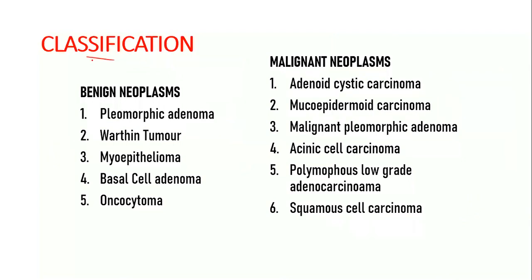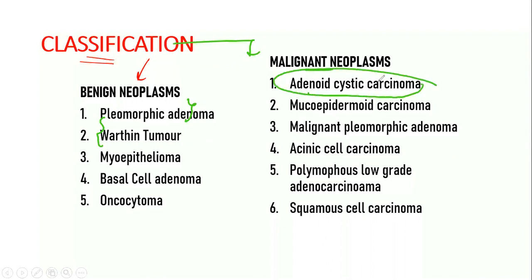Recalling the broad classification of salivary gland tumors, we had talked about benign neoplasms and malignant neoplasms. We have already covered pleomorphic adenoma and Warthin's tumor in detail, and started talking about malignant neoplasms with adenoid cystic carcinoma. In this video, we are going to talk about the most common malignant neoplasm, which is mucoepidermoid carcinoma.